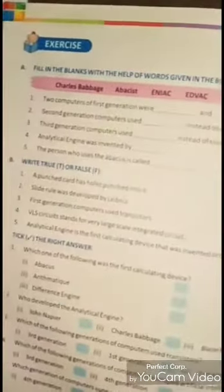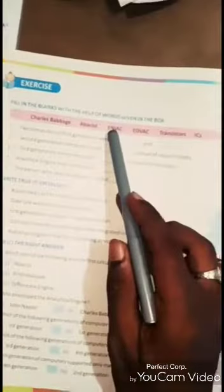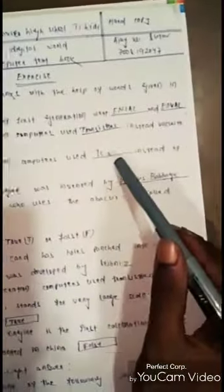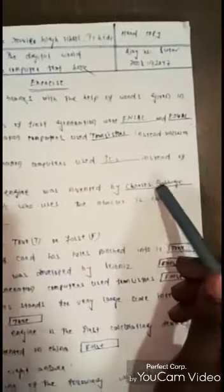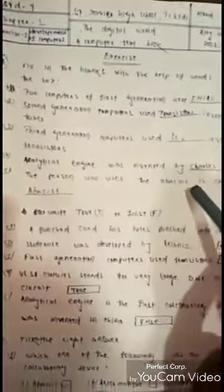Two computers of first generation were ENIAC and ADVAC. Second generation computers used transistors instead of vacuum tubes. Because vacuum tubes was used in first generation. And then third generation computer used ICs instead of transistors. Analytical engine was invented by Charles Babbage with the father of computer. The person who uses the ABACUS is called ABACUS.